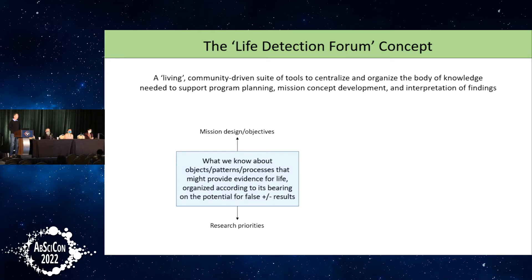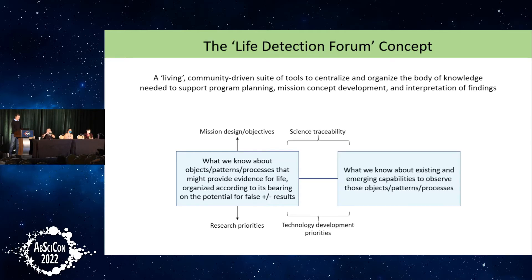Here's the basic idea. If we take what we have come to understand about biosignatures — things that might serve as evidence for life — it gives us insight into how we should design mission objectives and, where there are knowledge gaps, what our research priorities should be. If we then compare that with our understanding of technology available or in development to measure these things, we can establish science traceability — the logic flow from science goal to proposed payload element — and where that logic flow is incomplete, it identifies technology development priorities.